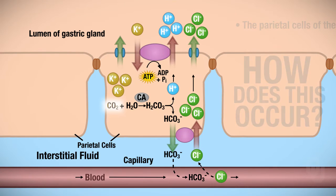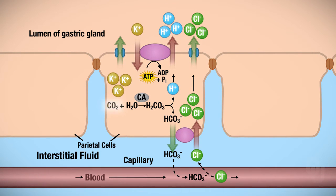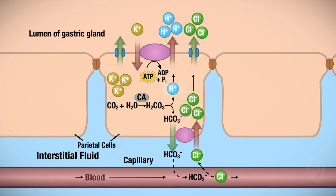So if you recall, we've got carbon dioxide in the parietal cell that interacts with water, and this reaction is catalyzed by carbonic anhydrase, which you're very familiar with now. We form carbonic acid, H2CO3, and we know that H2CO3 will readily dissociate. When it readily dissociates, you get your hydrogen ions and your bicarbonate ions. Remember, bicarbonate is HCO3.